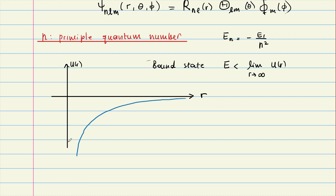We have for example E1 here, E2 here, E3 — this is not to scale but you get the idea. As you go toward 0, there will be infinitely many states. But they are all discrete: E1, E2, E3... E-infinity.